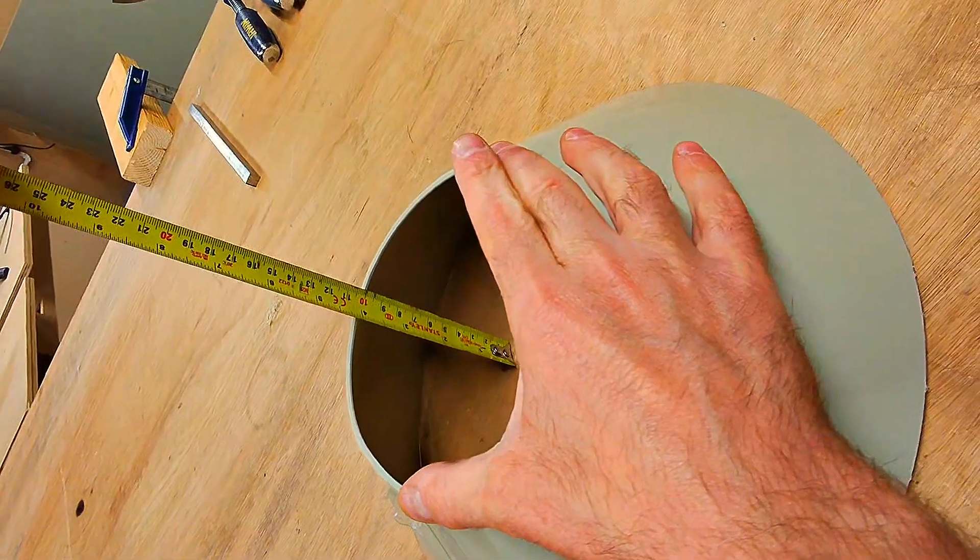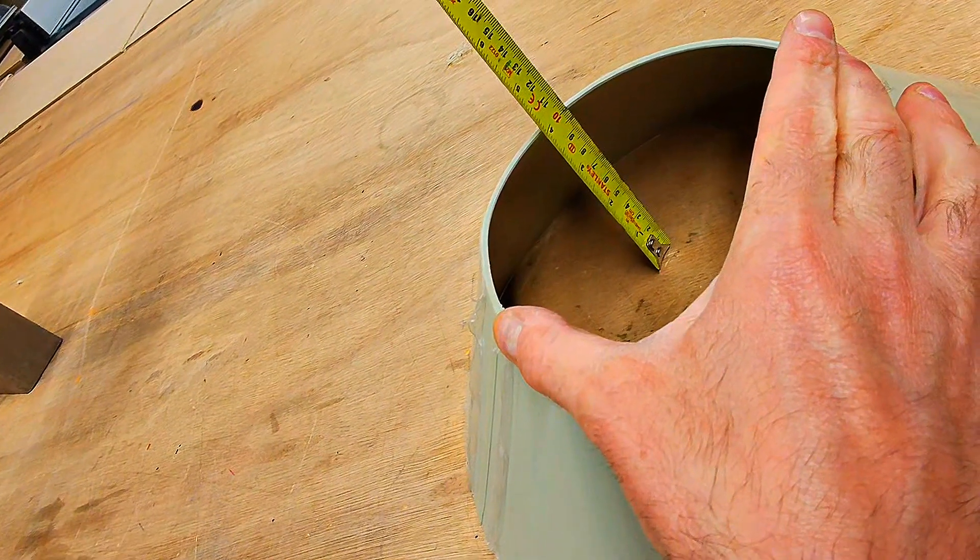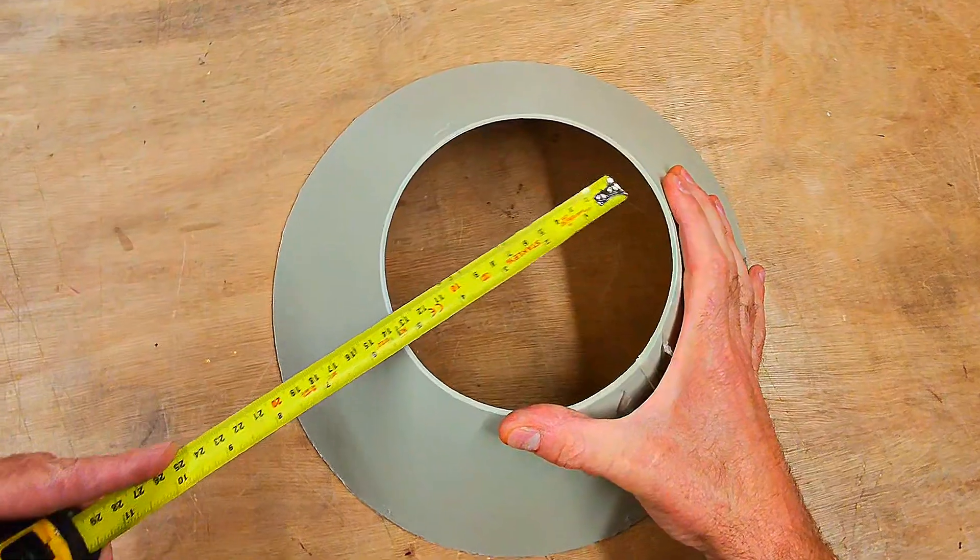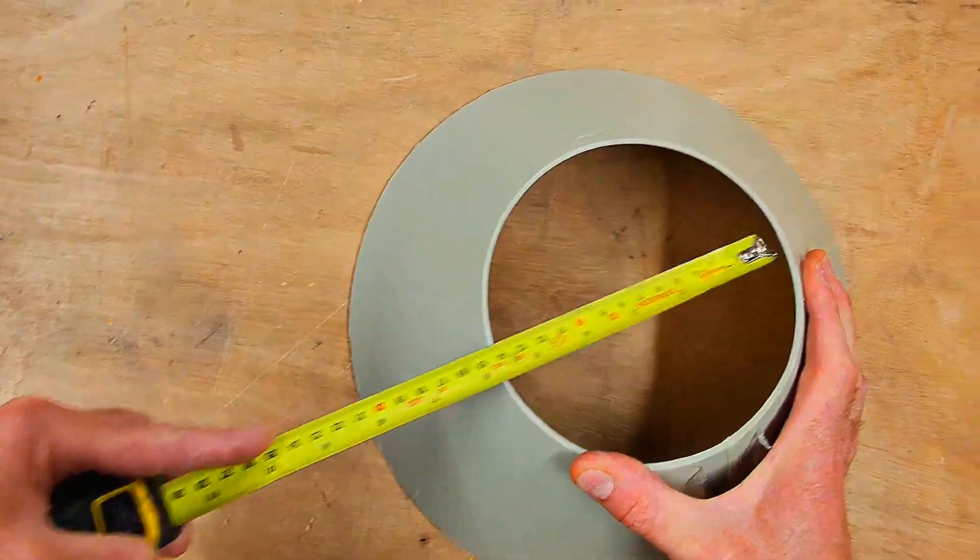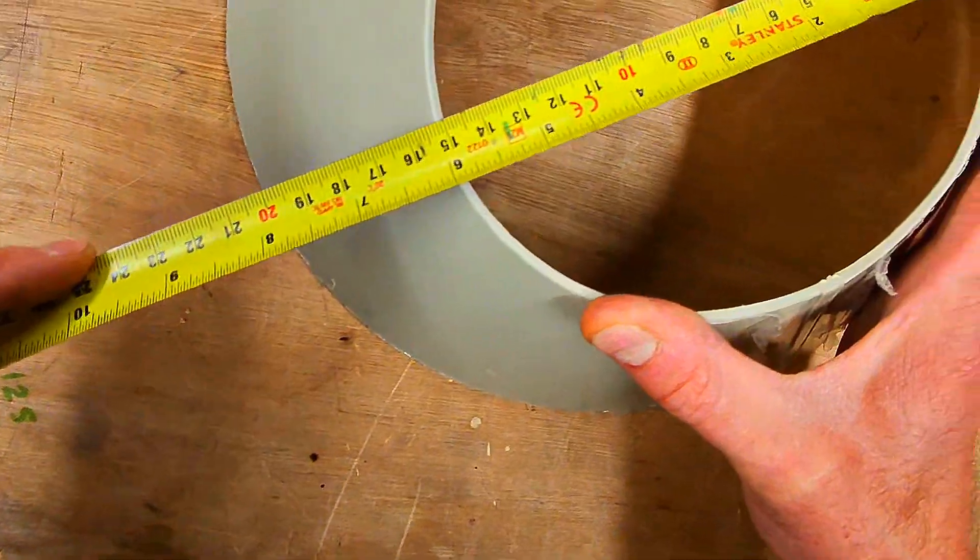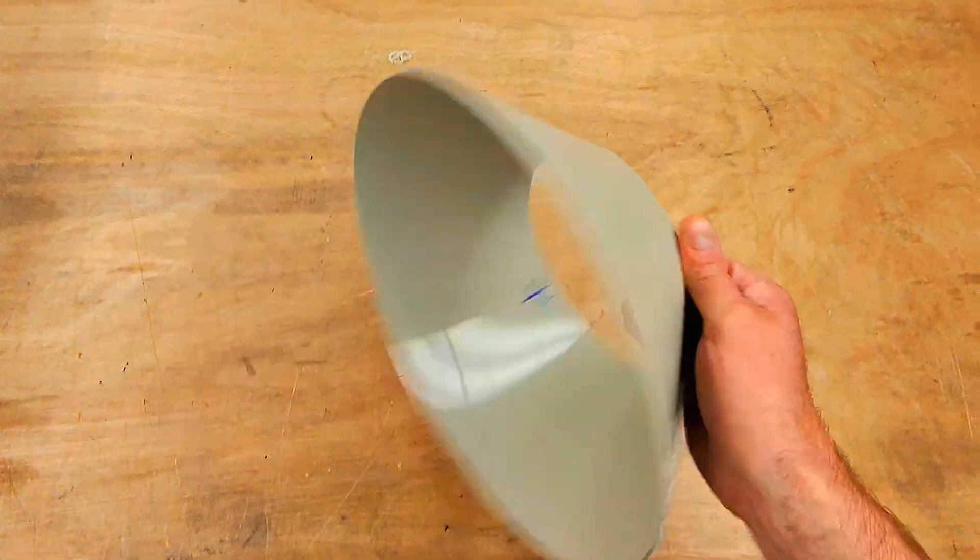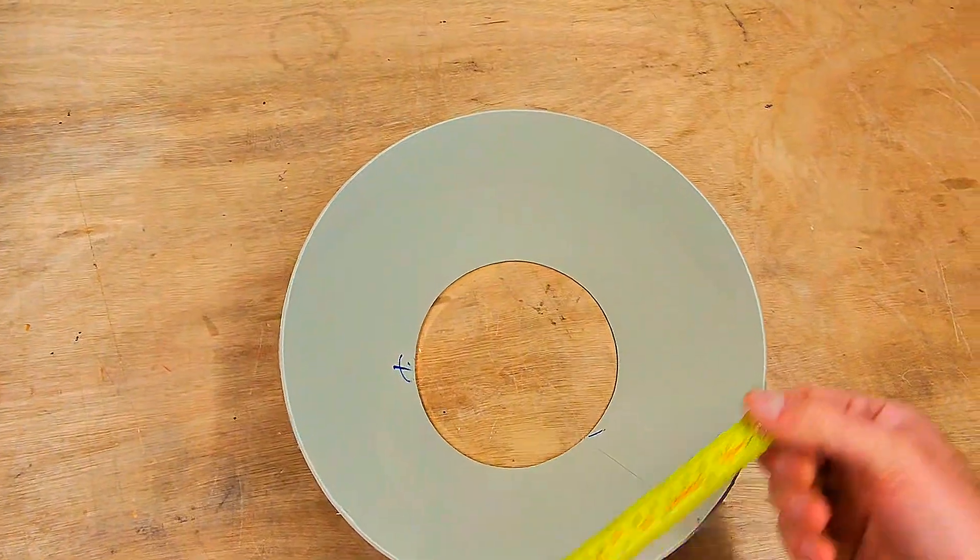So the height should be 100, smaller diameter should be 150, and the bigger diameter should be 300.